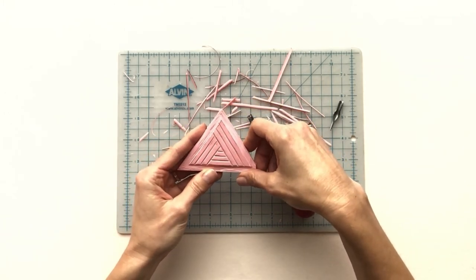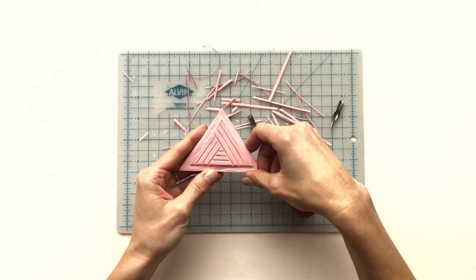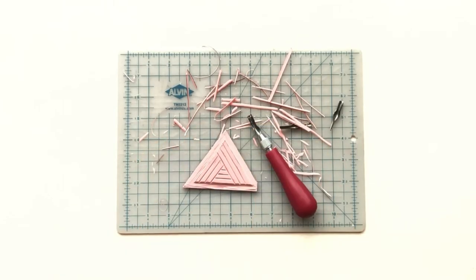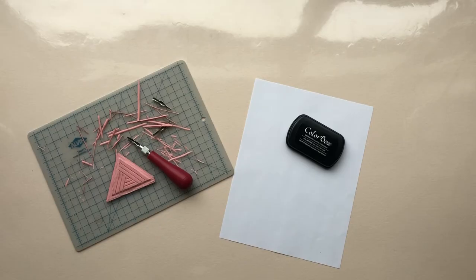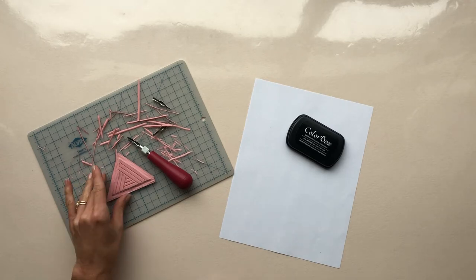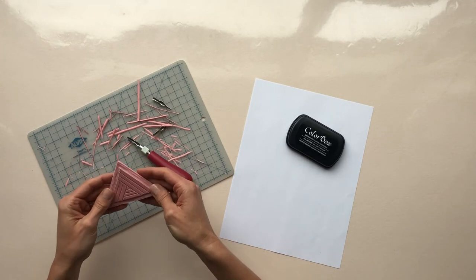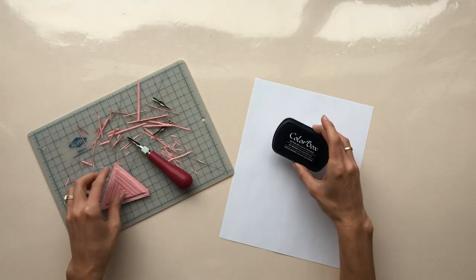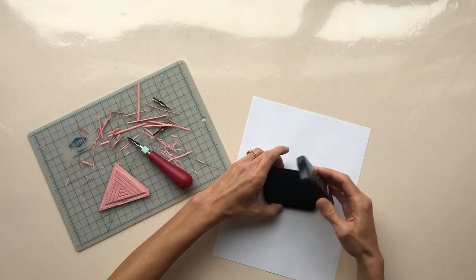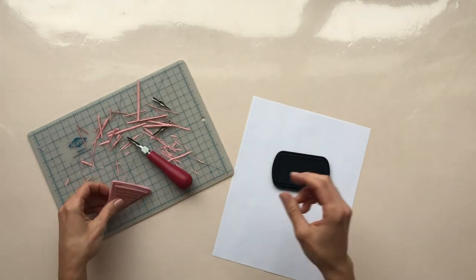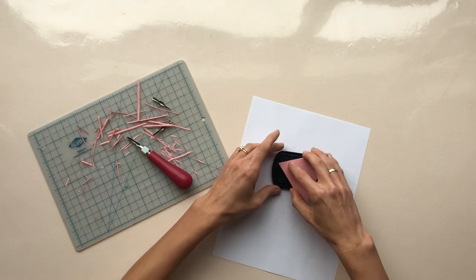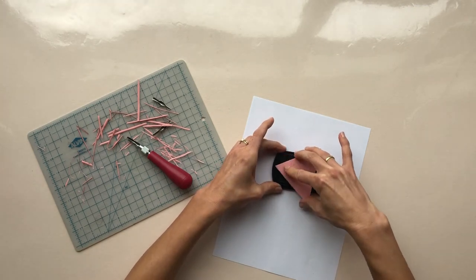And so I'm going to do a test print now, see how it comes out, and then I'll be able to finish up touching up the carving. So you can use the printing ink to test your carving with. I like to actually just use a regular stamp pad for this part just because it cleans up a bit faster and I'm not really doing anything that needs to be permanent.